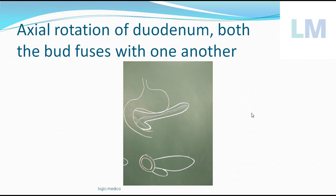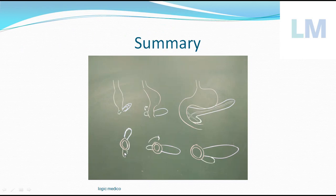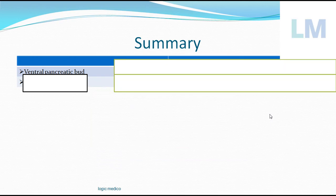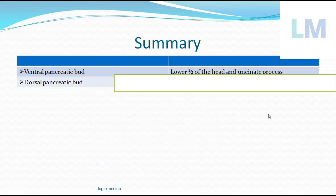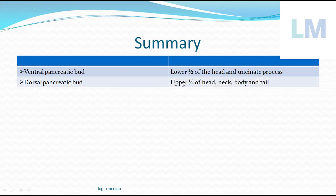In summary, the pancreas develops from two buds — ventral and dorsal. The ventral bud, initially bifid and anterior, shifts to the right side as the duodenum rotates. Due to axial rotation of the duodenum, the ventral pancreatic bud moves across the posterior surface to touch the lower portion of the dorsal bud. The dorsal bud gives the upper head, neck, body, and tail; the ventral bud gives the lower head and uncinate process.